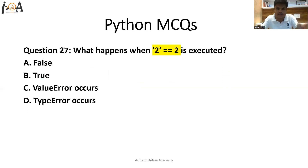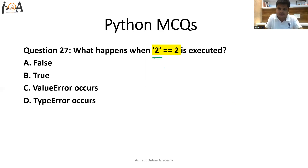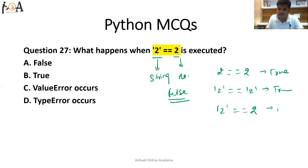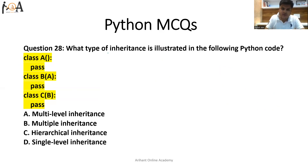The previous 20 questions have already been uploaded in the playlist named Python MCQs; the link is also in the description. Question 27: what happens when we write '2' == 2? This is going to return false because '2' is a string and 2 is an integer. If both were the same type, it would return true, but since one is a string and the other is an integer, the result is false. So option A is the correct answer.